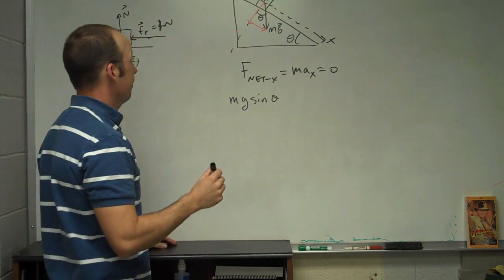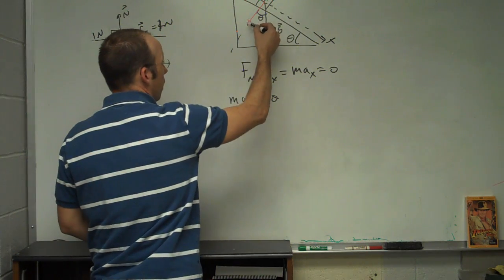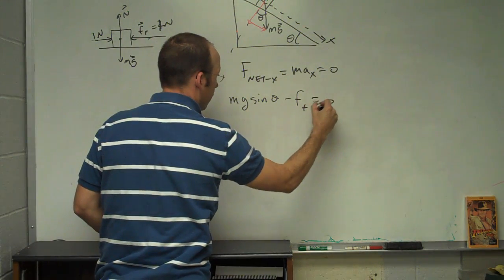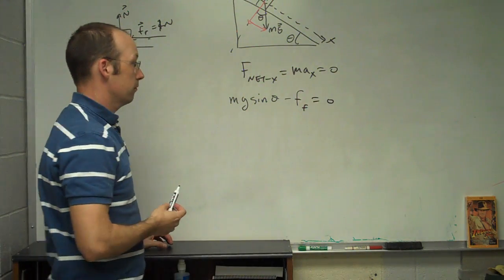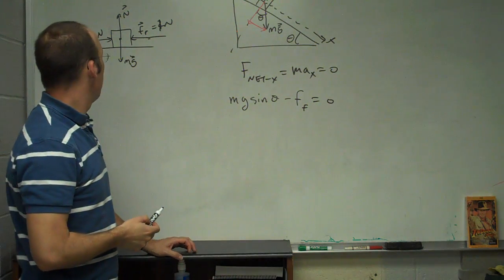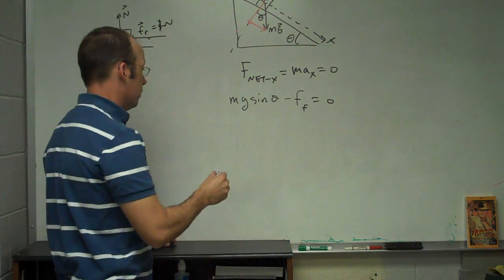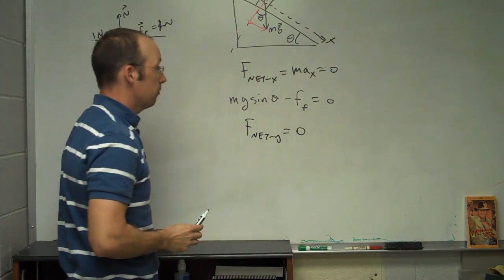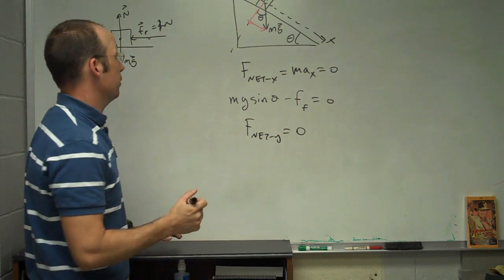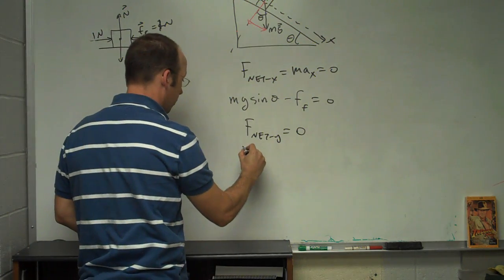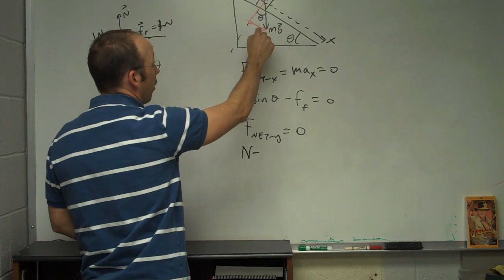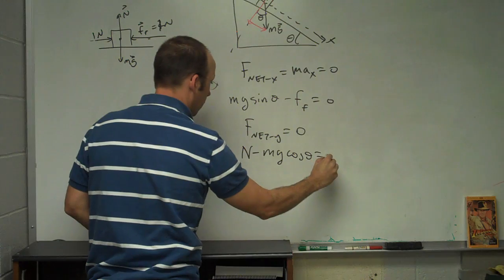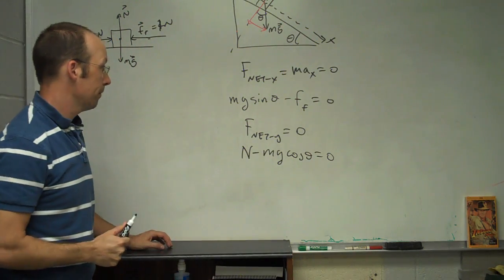Okay, what about? Oh, and then we have the frictional force is negative F_f equals zero. So what about the y direction? Well, F_net_y equals zero, it's also not accelerating in the y direction. So I have the normal force, then I have part of the gravitational force, mg*cos(theta) equals zero.